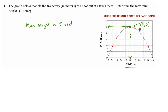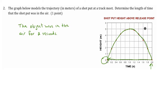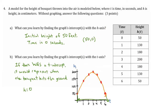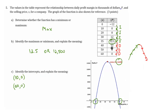To recap: question number one was looking for the maximum height, which we found was 5 meters. Question number two was looking for how long an object was in the air — that was 2 seconds. Question number three was looking for the initial height, which was 50 feet. Question number four was more complex — we checked out the intercepts and graphed the table to see what's happening. Question number five looked at another table and graph, focusing on a maximum value and identifying the intercepts and explaining what they meant in context.